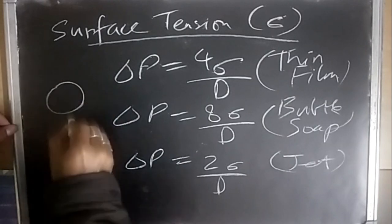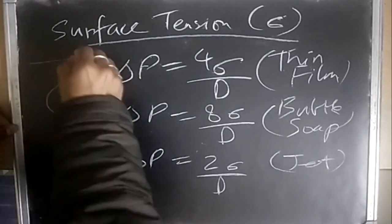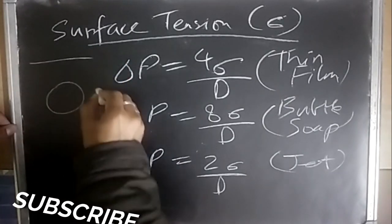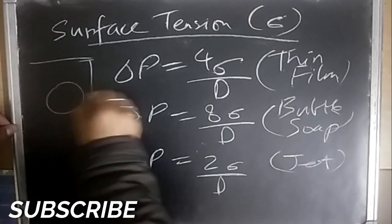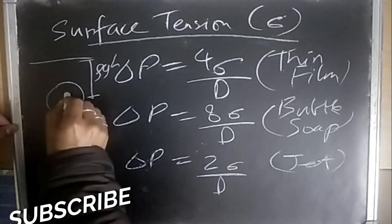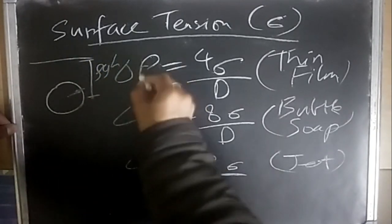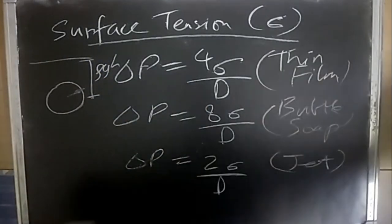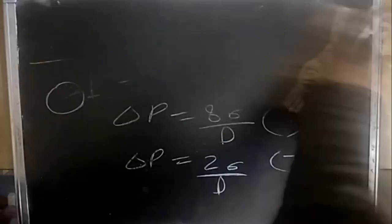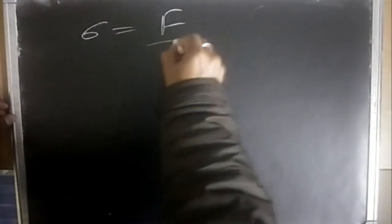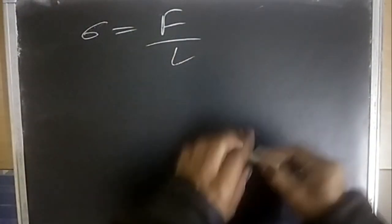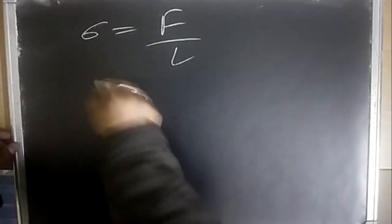If a bubble is underwater, the pressure is ρgh minus the internal pressure, giving you ΔP. Some questions may be given that way. Next, sigma is defined as force per unit length — that is the surface tension.